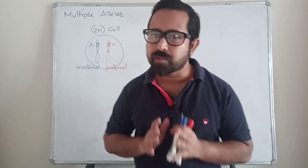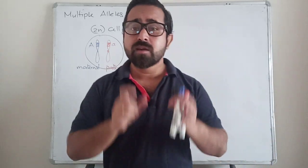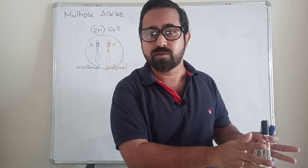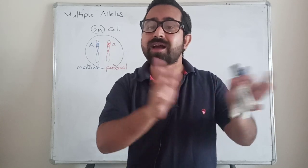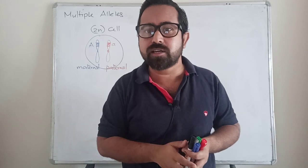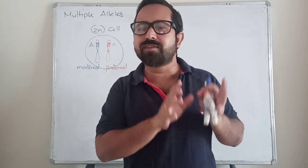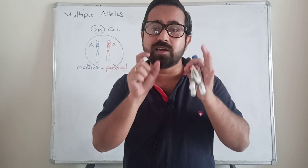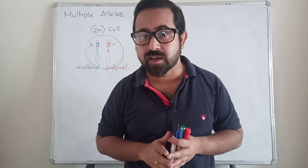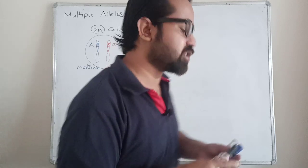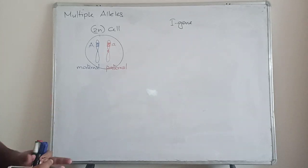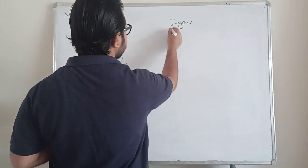But when it comes to a population — imagine a human population — for a particular gene there could be many more alleles. It's not just two alleles; there could be more than two, sometimes up to 1200 alleles for a gene in the human population. Now we are looking at a very simple example: a gene that controls what kind of sugar modification will be done on the RBC cell surface. In the human population, we call it the I gene, and it has three different variants.